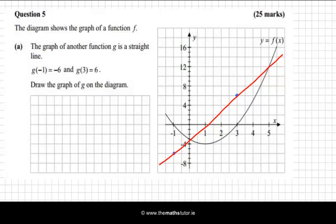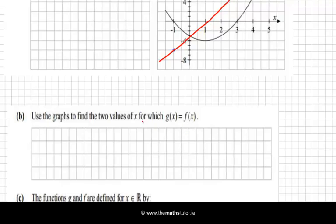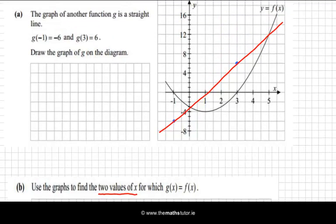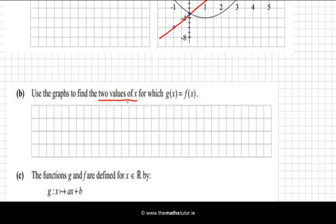What else are we asked in this question? Use the graphs to find the two values of x for which g(x) equals f(x). Now g(x) and f(x) are the y-coordinates, and they are equal. I can use my graph, and it's clearly here and here where they are equal. From my graph, the x values are when x is 0 and when x is 5. So we say x = 0 and x = 5.